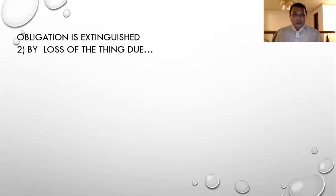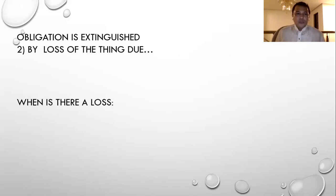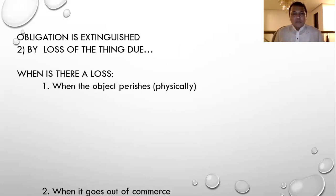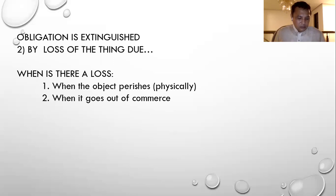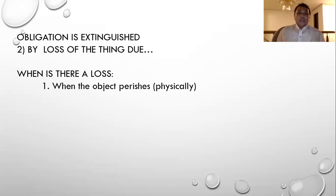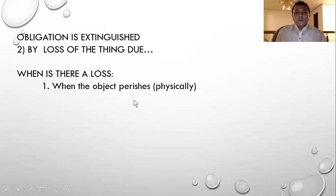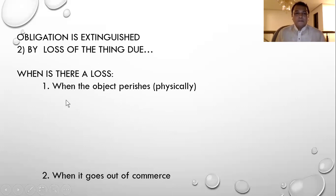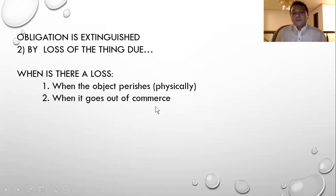Now we go to number two: loss of the thing due. An obligation is extinguished when the object perishes physically. For example, a Toyota Fortuner with plate number 111-2F was promised by the debtor, but before it was to be delivered, it was hit by lightning and caught fire without the fault of the debtor — so the obligation is extinguished.